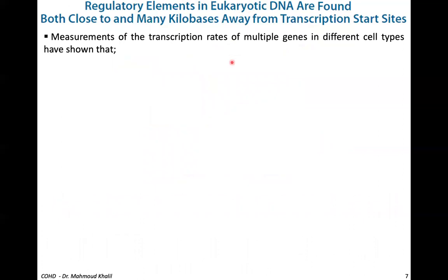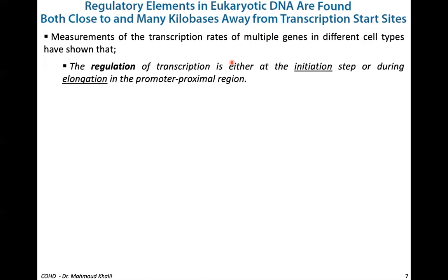Where do these trans-elements act? Measurements of transcription rates of multiple genes in different cell types have shown that the regulation of transcription occurs either at the initiation step or during elongation. You may recall that transcription — in both prokaryotes and eukaryotes — is composed of three steps: initiation, elongation, and termination. The regulation occurs only at the initiation step or during elongation in the promoter-proximal region.